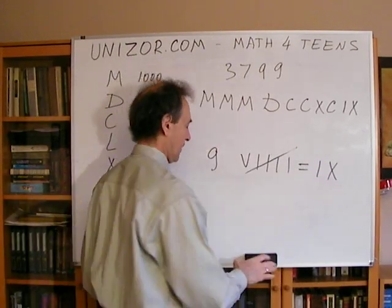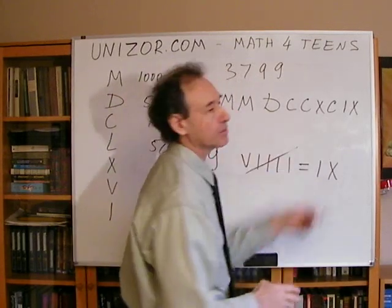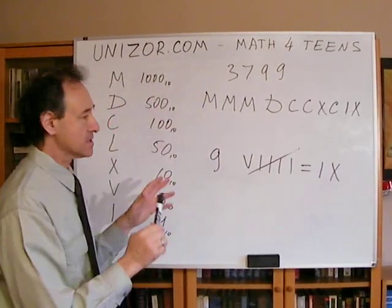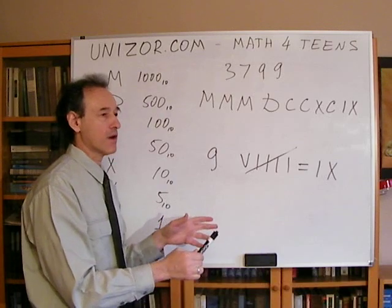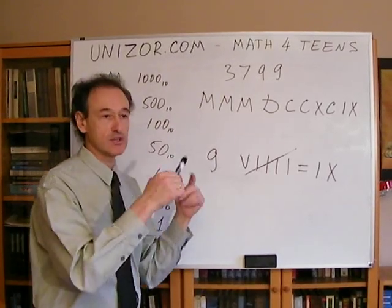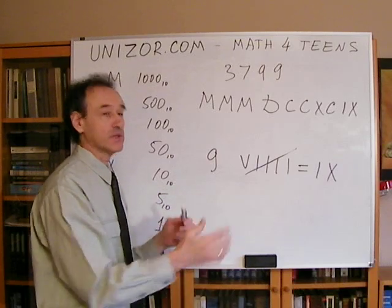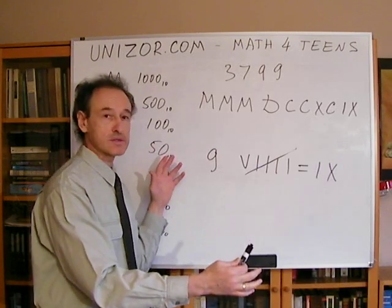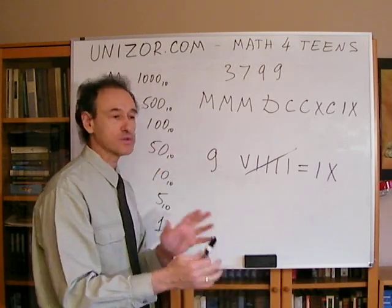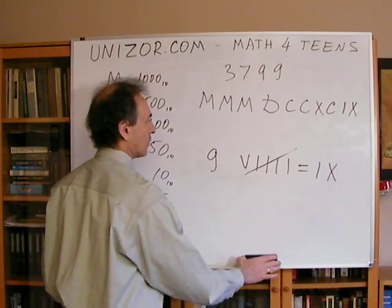Similarly, this is 90. Instead of using L and three Xs, we use X and C, which means subtract 10 from 100, which equals 90. And subtract 1 from 10, which equals 9. So this is basically 3,799. This is a system one step further from my primitive system. The improvement is they have different group sizes: bigger groups and then smaller groups to represent smaller numbers.